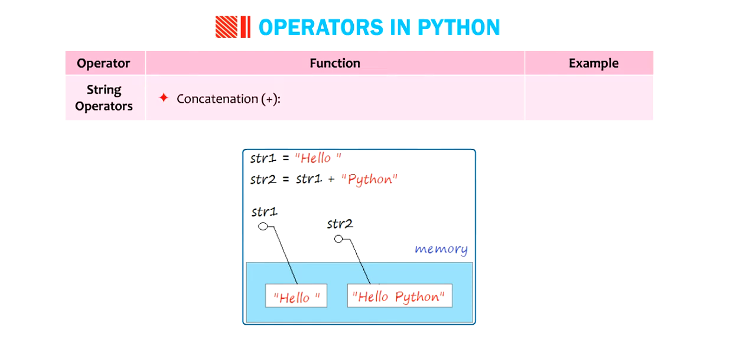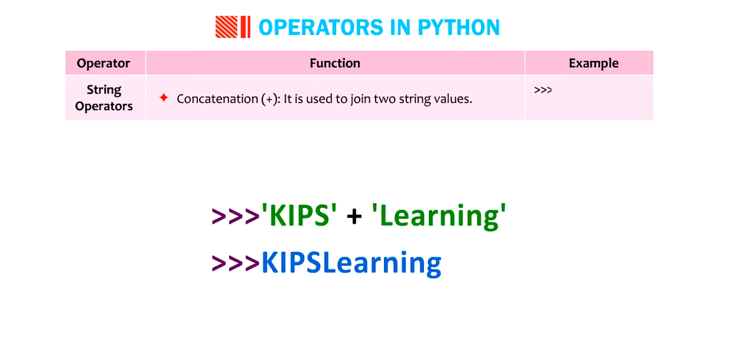Concatenation. Plus. It is used to join two string values. Example. Kips plus learning. Kips learning.